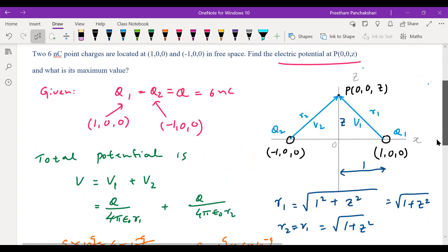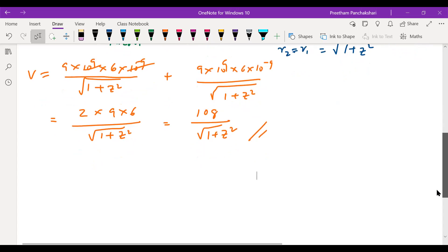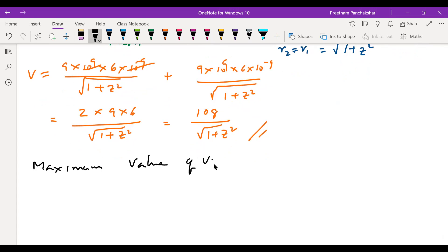And what is its maximum value. That means the potential at a point P on the z-axis, what is the possible maximum value of potential? To find the maximum value of potential, we have to find the condition for maximum.